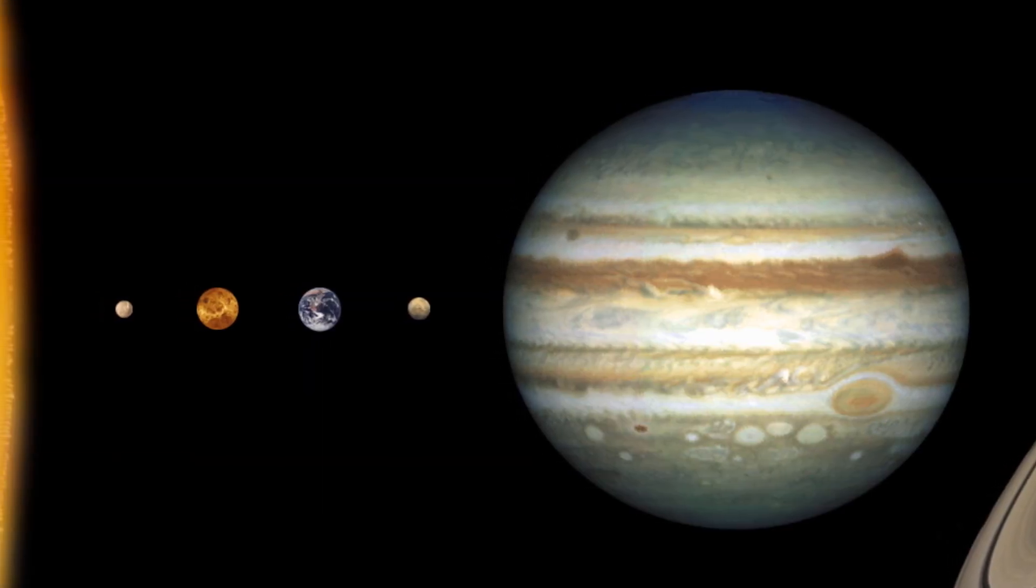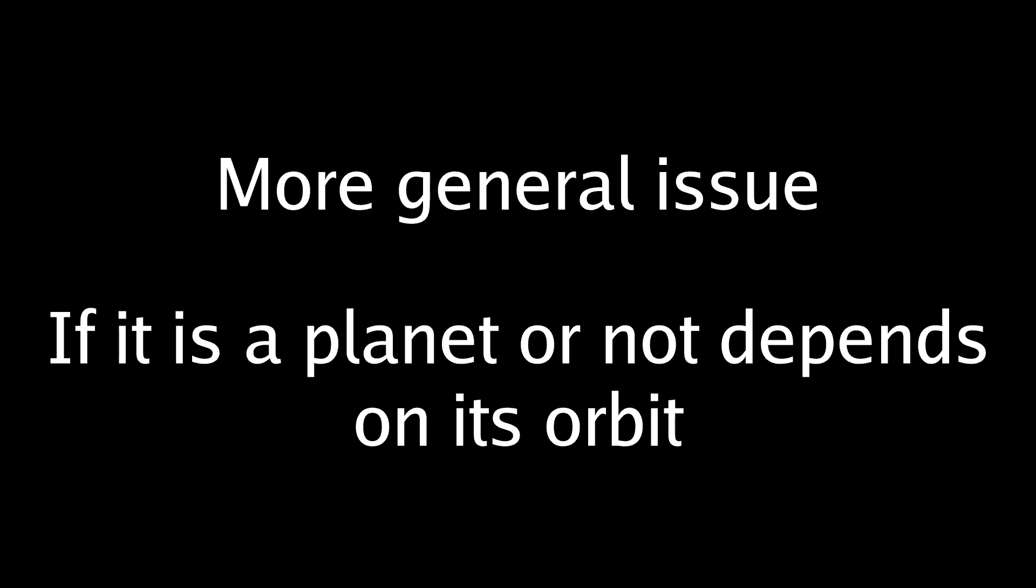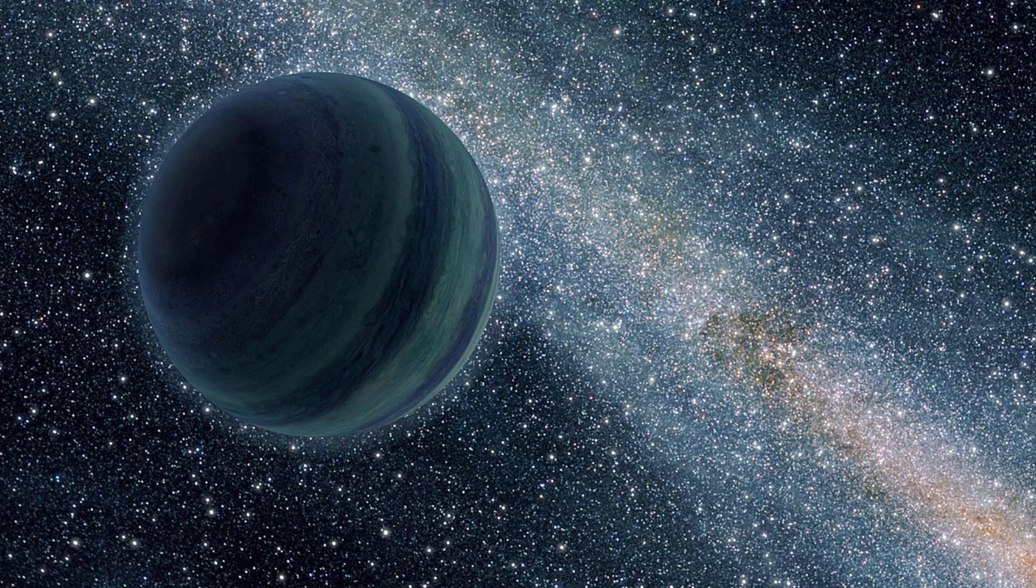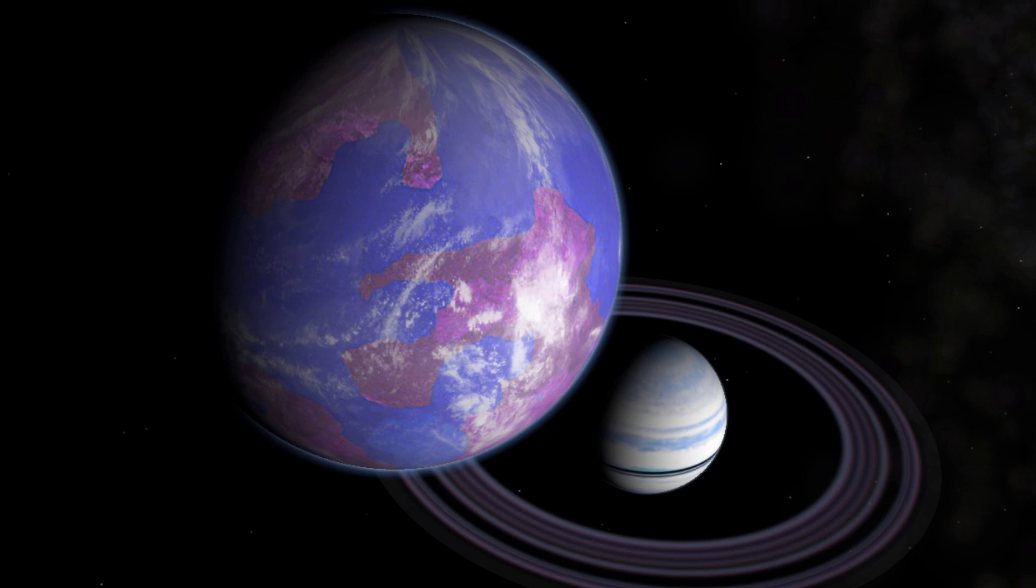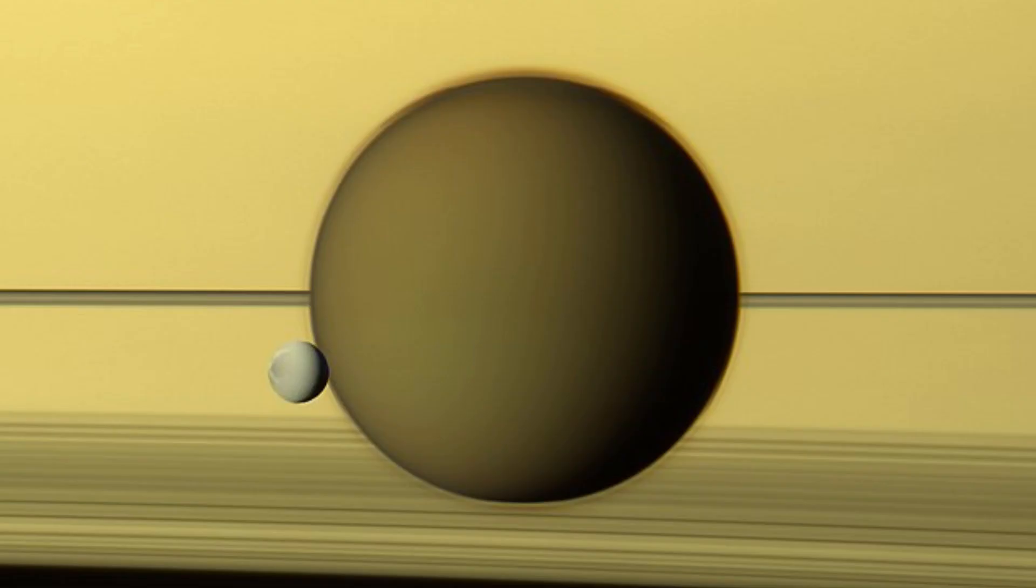The further away a planet is from the sun, the more difficult it becomes for it to clear its orbit. If Pluto was in Mercury's orbit, Pluto might be considered a planet. And this is a part of a more general issue I have with the definition of a planet. The fact that it is a planet or not depends on the nature of its orbit. A planet-like object freely floating in space without a star? Not a planet. That's a rogue planet. A planet-like object orbiting another planet? Not a planet. That's a moon. A planet-like object far enough from its star that it becomes hard to clear its orbit? Not a planet. That's a dwarf planet.